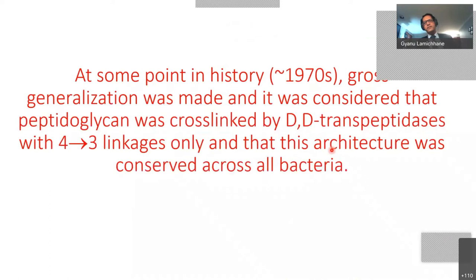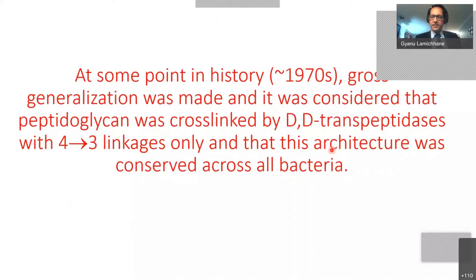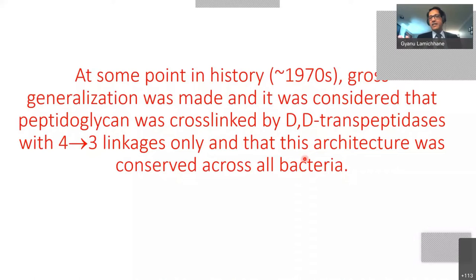But at some point in history, around the 1970s, a gross generalization was made: it was considered that peptidoglycan of all bacteria, including mycobacteria, was cross-linked only by DD transpeptidases, and only 4-3 linkages were made. That architecture of peptidoglycan was considered conserved across all bacteria. When the work was done in three organisms and found the same thing, that was the conclusion they ended up having to make.